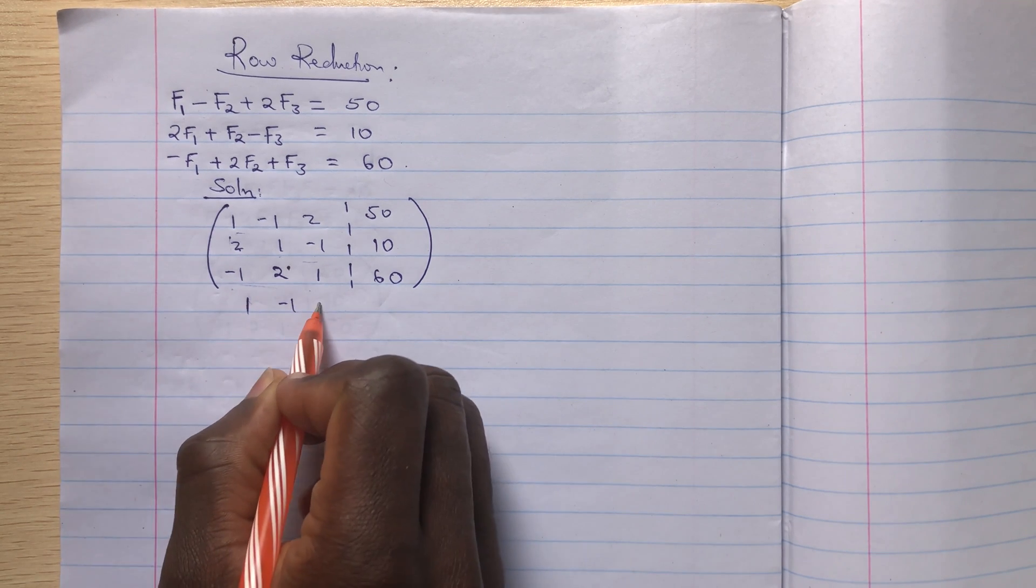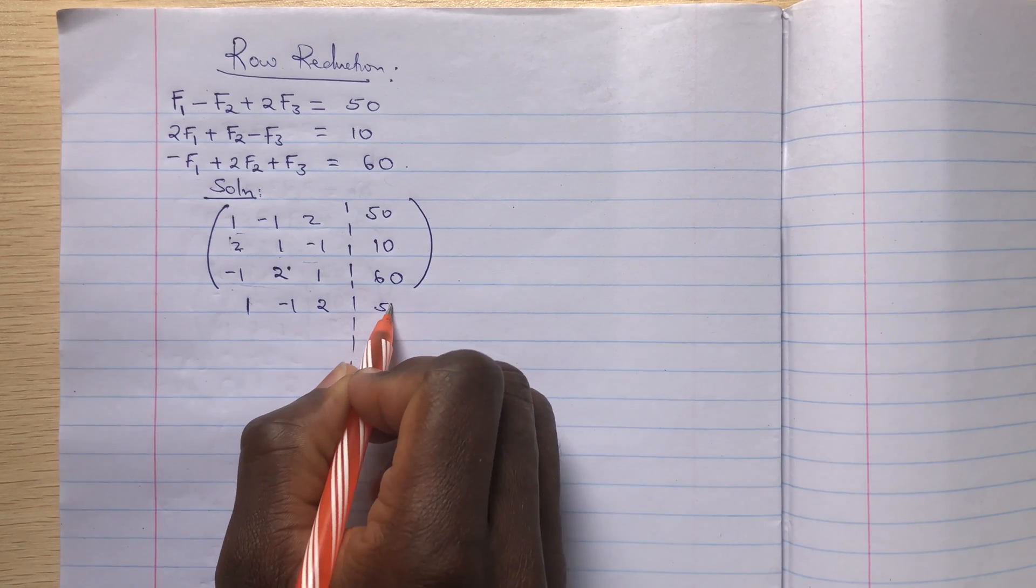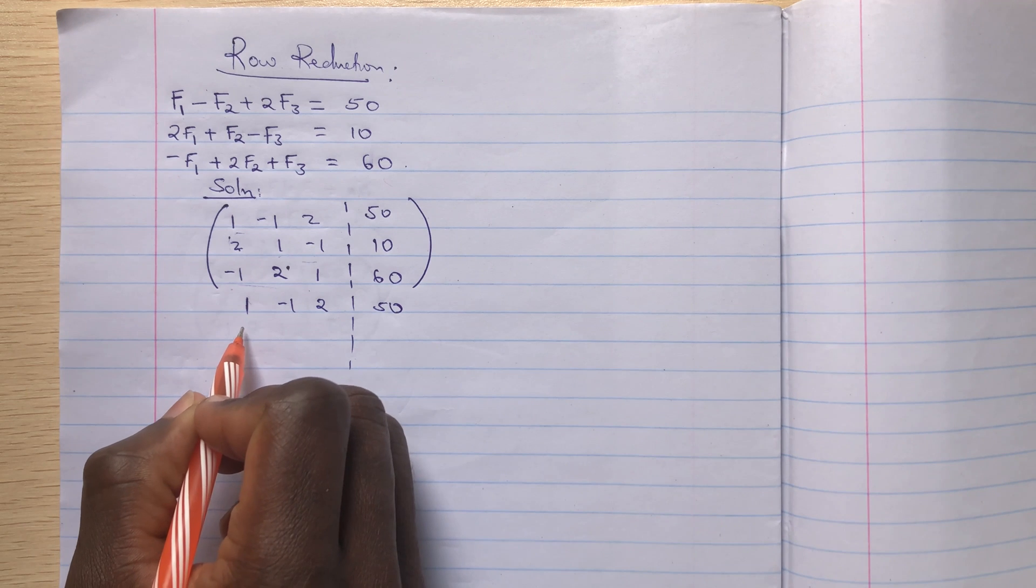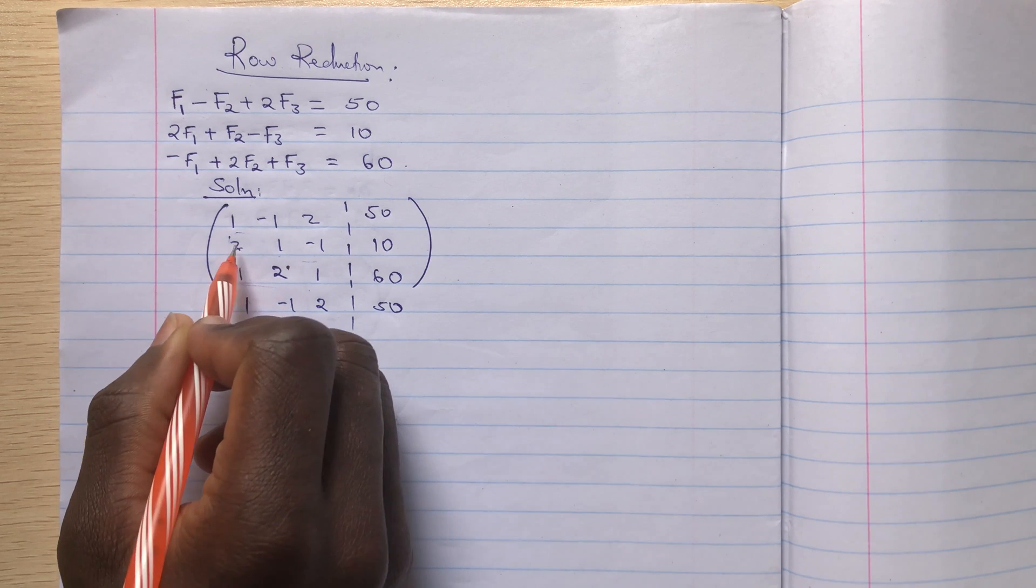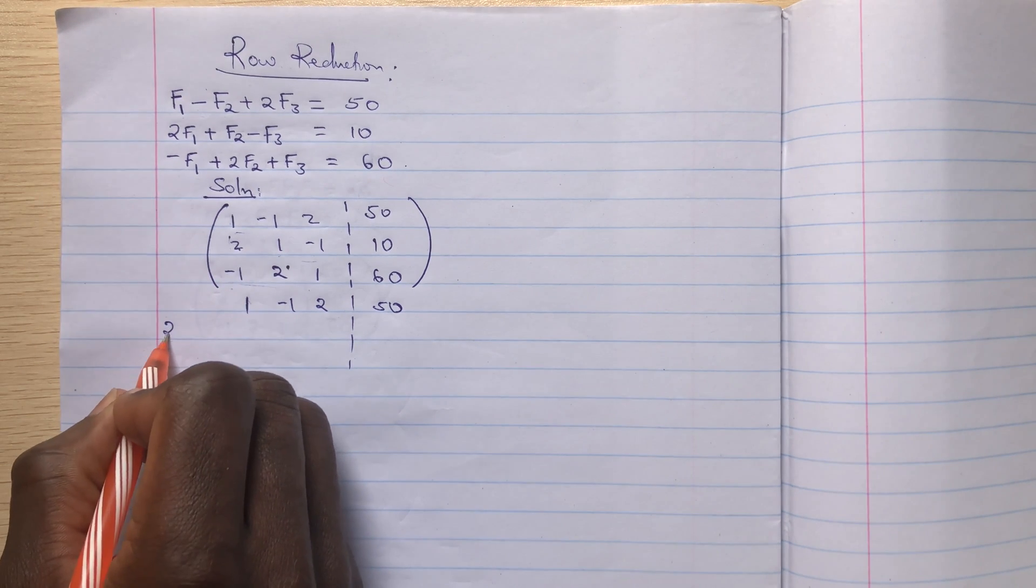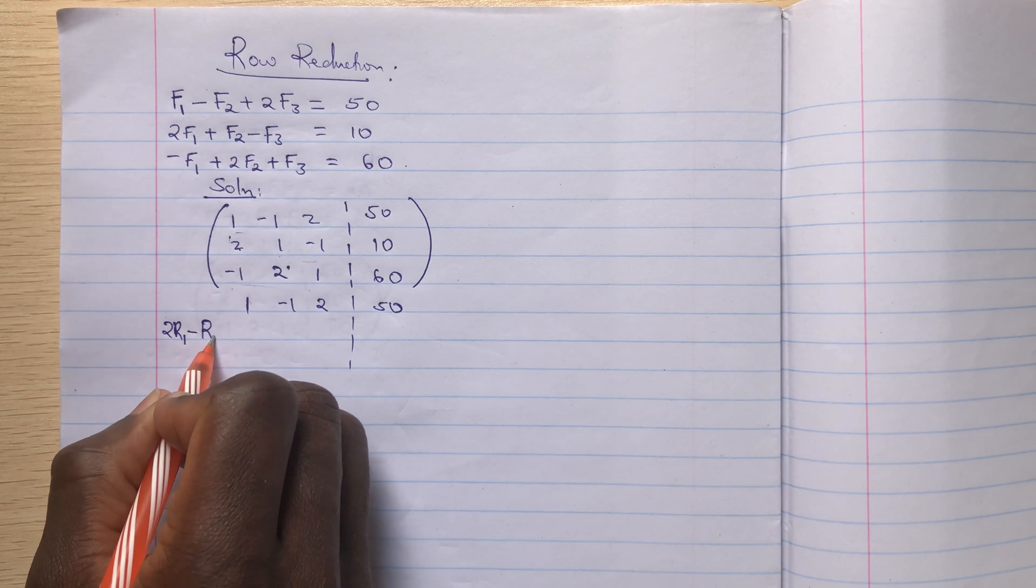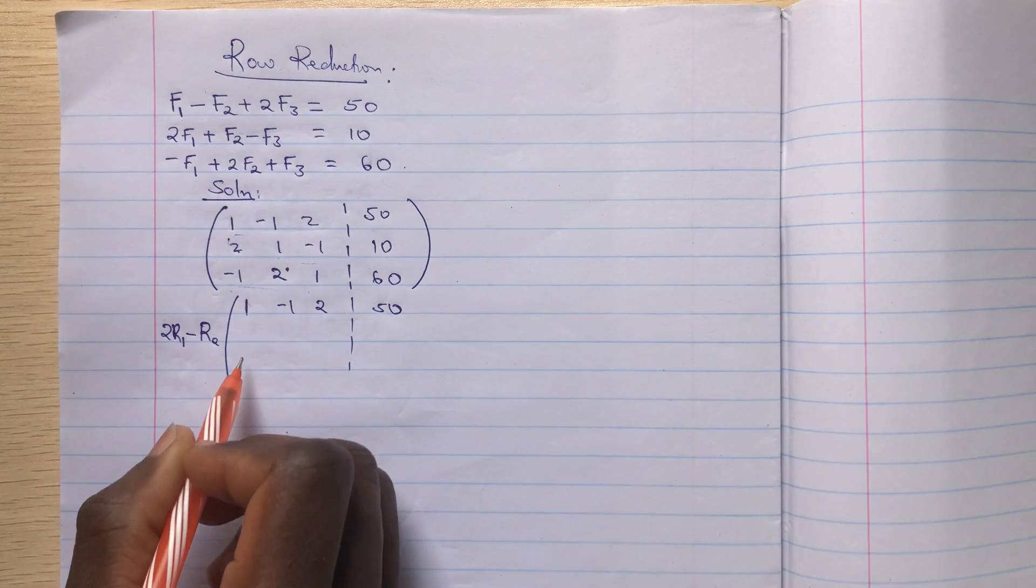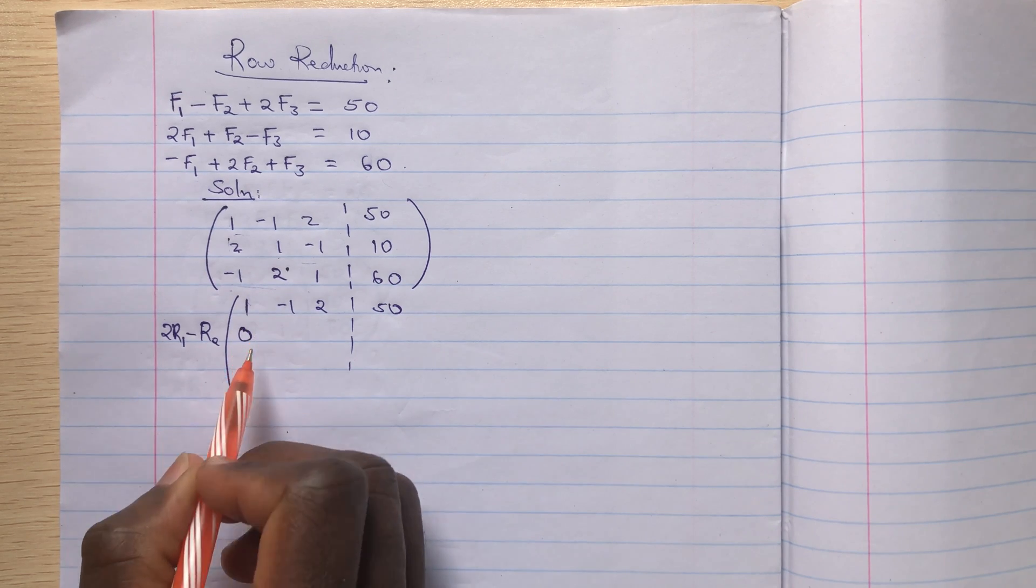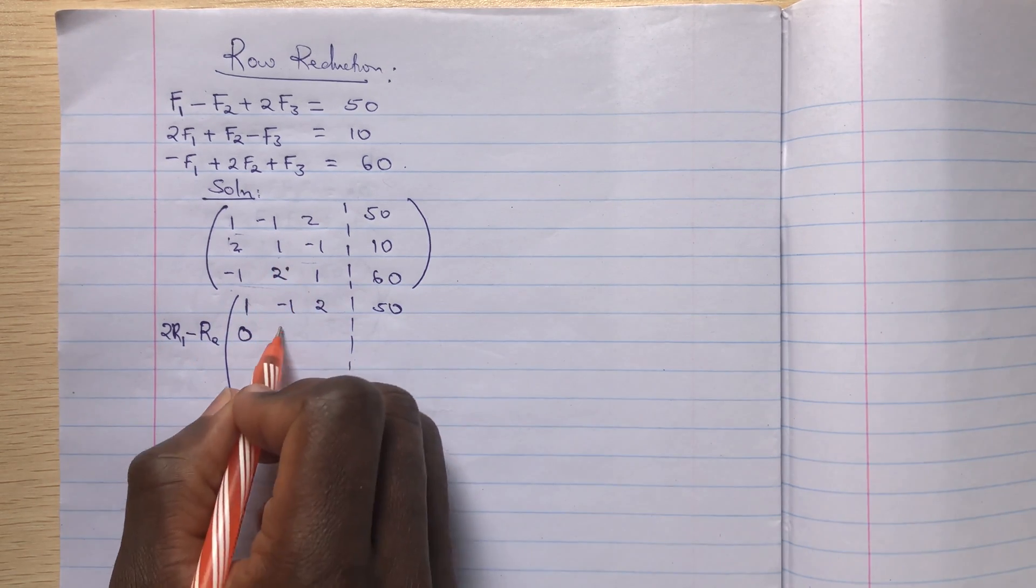So to create a zero here, I'll multiply this row by 2 and subtract it. So I'll have twice rho 1 minus rho 2. So twice of this minus this, we'll get a zero here. Twice of this minus this, I'll get negative 2 minus 1 is negative 3. Then twice of this minus negative 1, so it will be positive 4 minus negative 1 is positive 5.